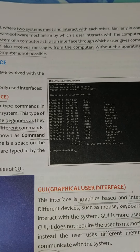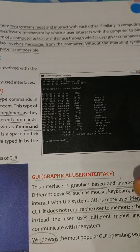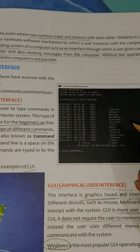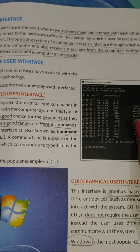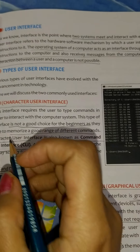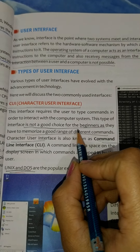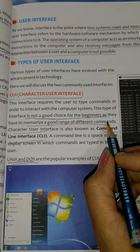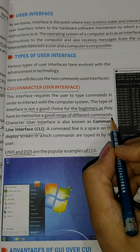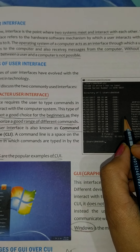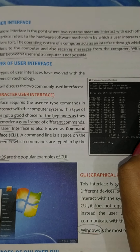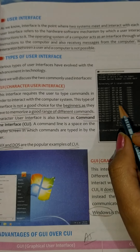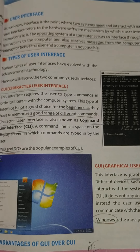In CUI, you type a command and it gives you the answer. When you type the command, you get the result. So for beginners it is not a good choice, as they have to memorize a good range of different commands. You have to learn the commands because you have to type them here. There are no icons — no colorful icons.